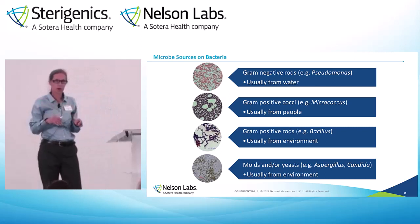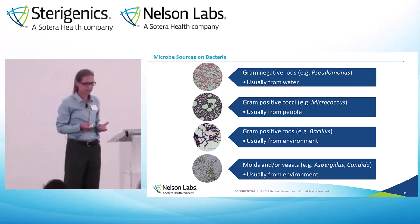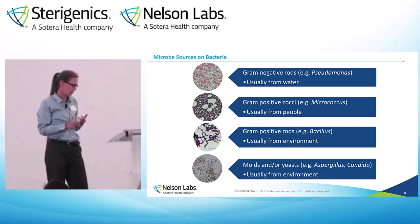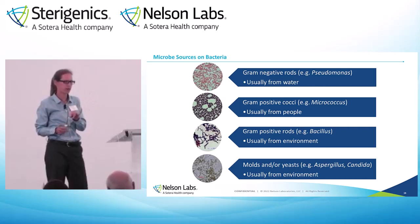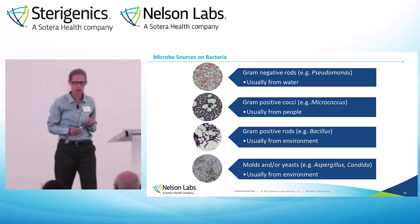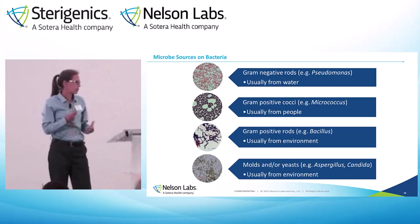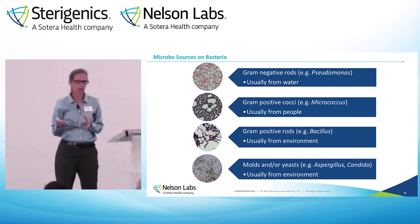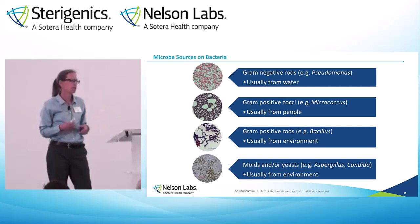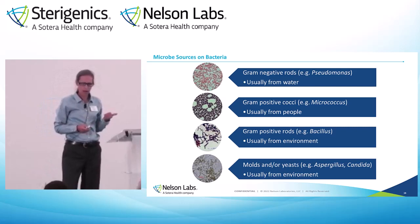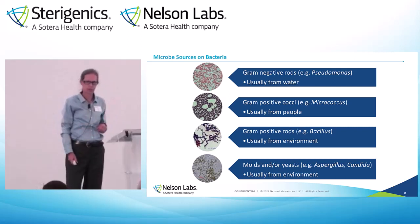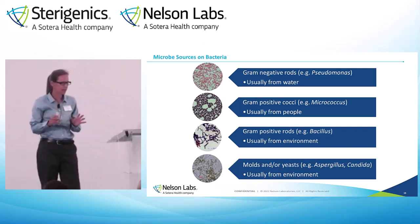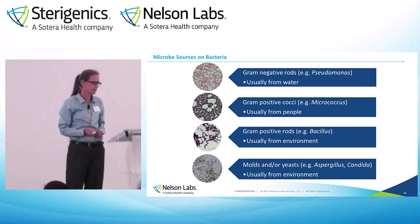Knowing what organisms are on your product can be very helpful. If you have gram negatives — which aren't super common — they tend to be the ones that make people more sick. If you've got them, it's usually pseudomonas, because that lives really well in water. If you've got a pseudomonas or gram-negative problem, maybe you need to check out your water. Gram positive cocci tend to come from people — we have different types on our skin. If you have gram positive rods, or molds and yeast, they're generally coming from your environment.